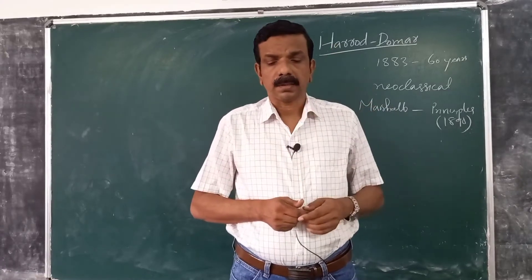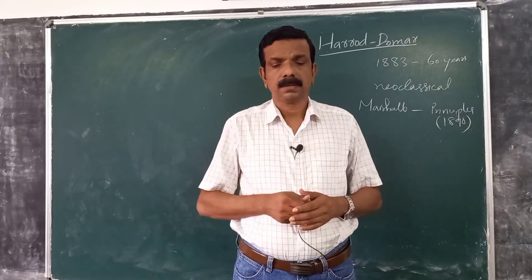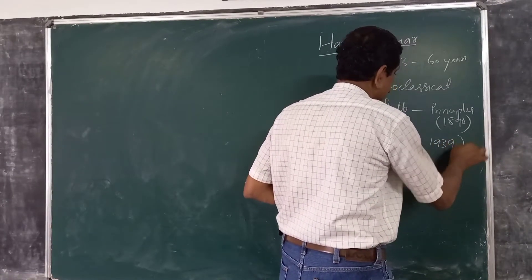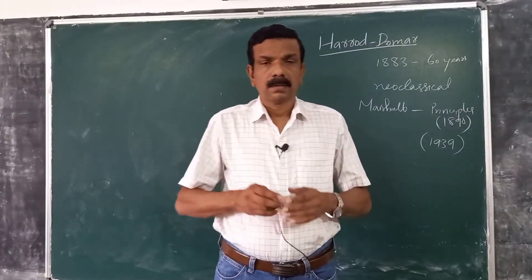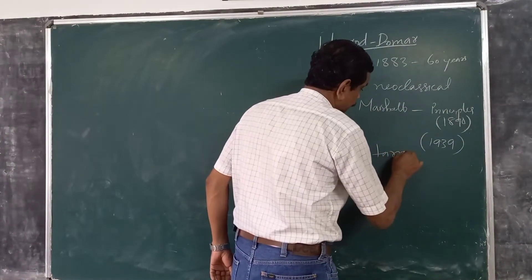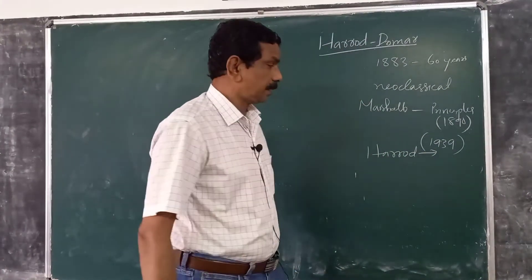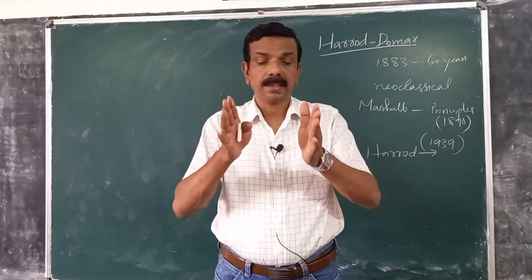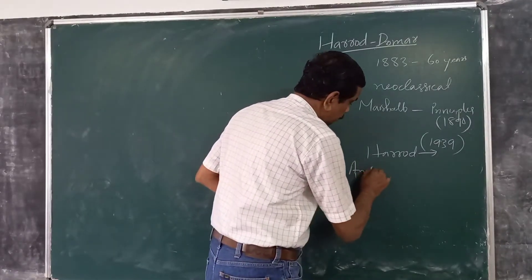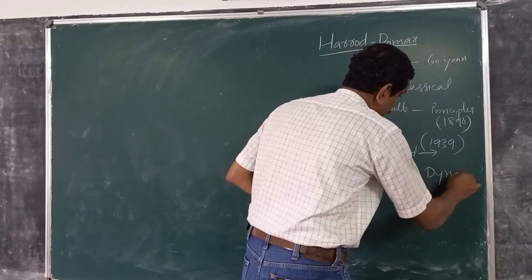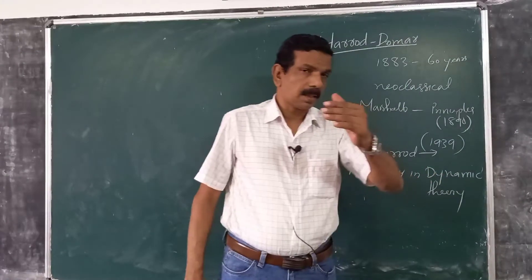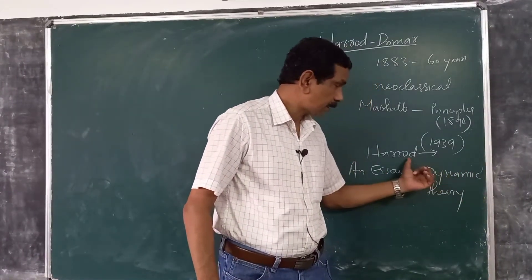Modern growth theory, as we see it today, started with a paper published in 1939. The name of the paper was 'An Essay in Dynamic Theory,' published by Harrod in 1939. So, modern growth theory started with the publication of 'An Essay in Dynamic Theory' by Harrod in 1939.